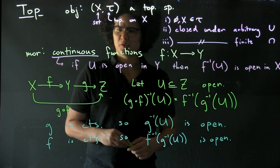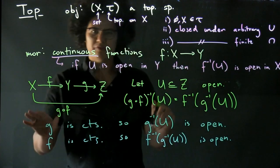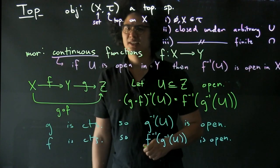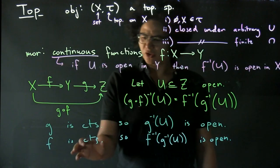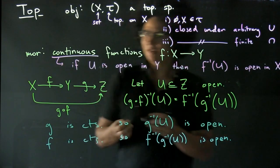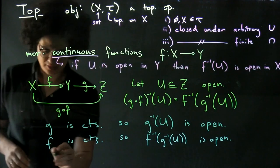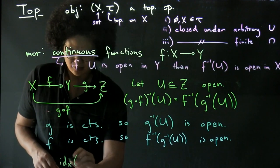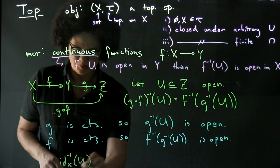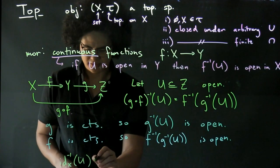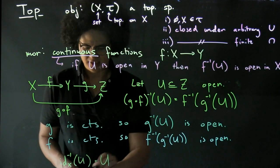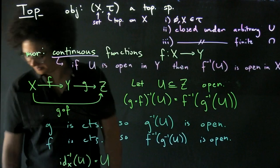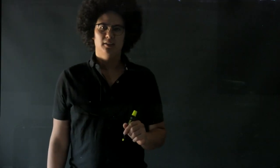Finally, we want to see that we have an identity function — the same as the identity function for sets — and we just want to know: is it continuous? It is continuous, because the pre-image of id_X of some open set U in X is just U, which we've already said is open.